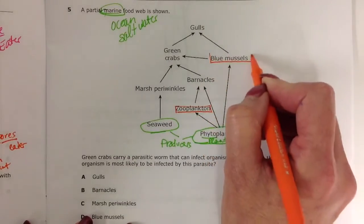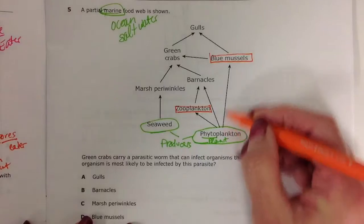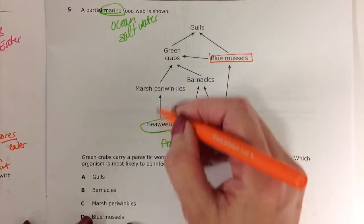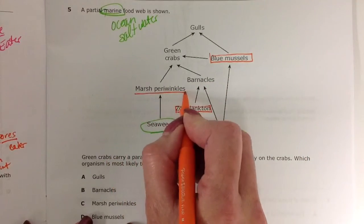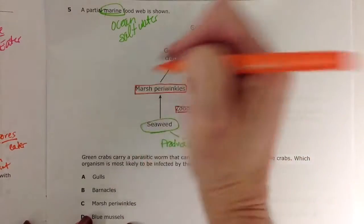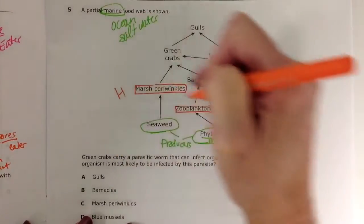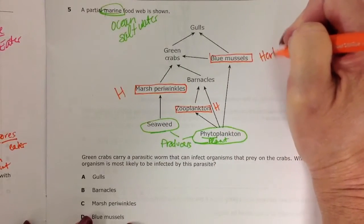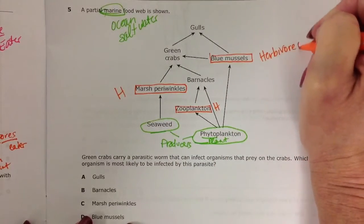The blue mussel is a herbivore, only feeding off the producer. And the periwinkle, marsh periwinkle, whatever that cute little critter is with such a cute name. These are all our herbivores.